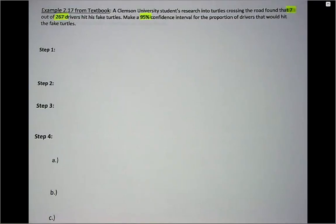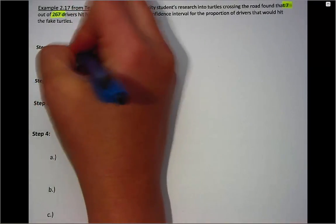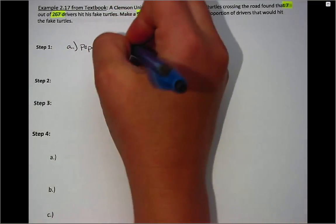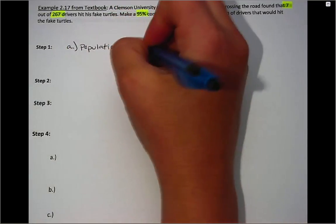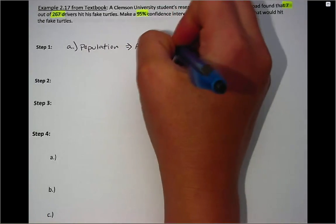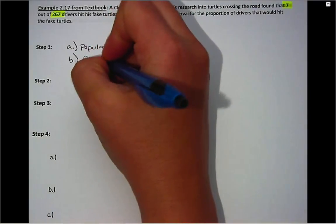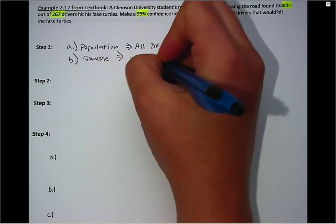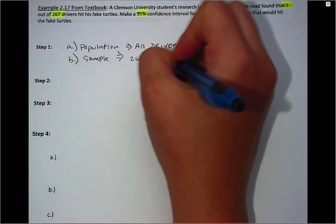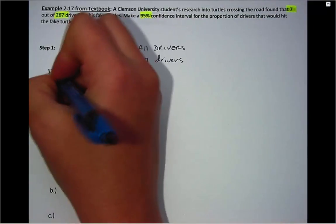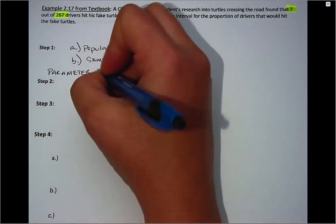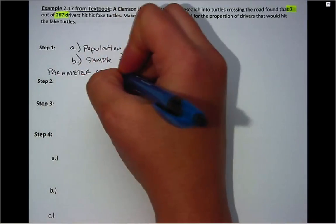In step one we first identify our population, and for this example it's just generically all drivers. Second, we want to identify the sample, and here our sample is the 267 drivers. Then one thing I want to add is what we'll end up making our inference on when we're done calculating the confidence interval.